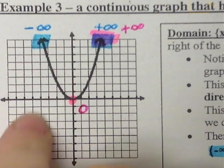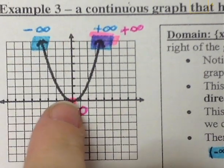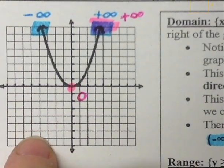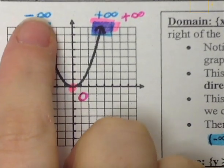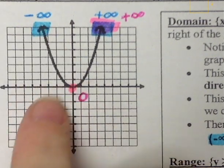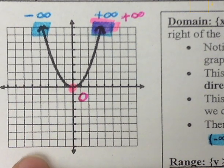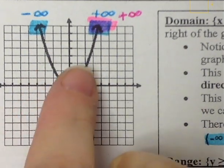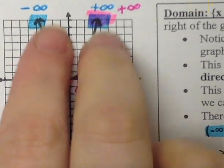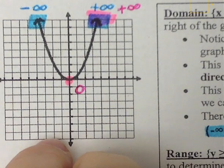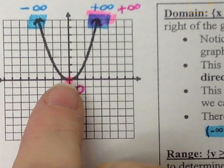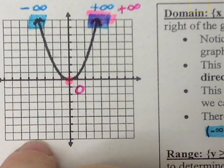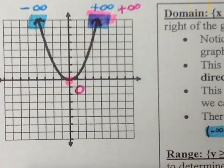If this arrow had been pointing down, the domain would have stayed the same because this arrow would have been pointing down and to the left — so the left side would still be touched. But it would have also been pointing down, so it would have reached that negative infinity as well. This is a quadratic. Quadratics can only have both arrows pointing up or both arrows pointing down. A cubic function will have one arrow pointing down and one arrow pointing up, so you will see the domain and range being all real numbers for cubic functions.